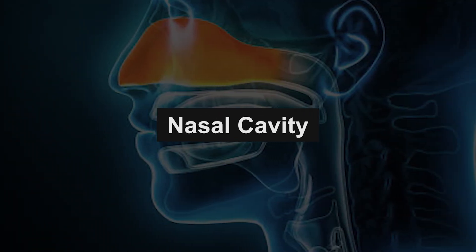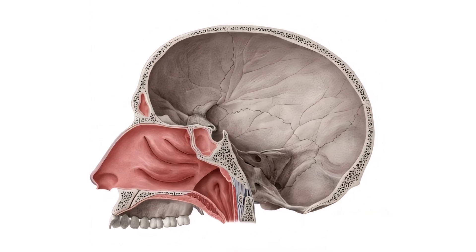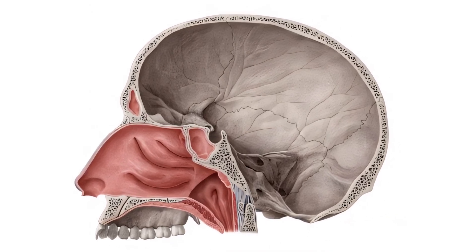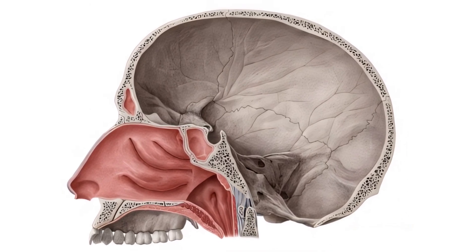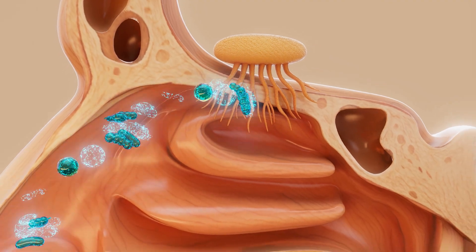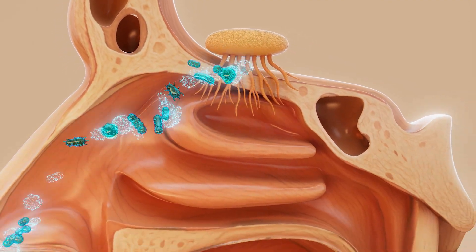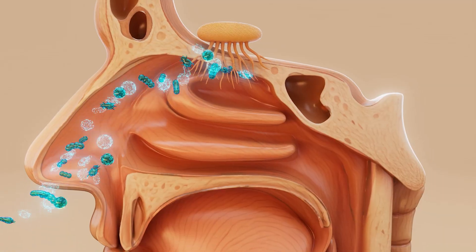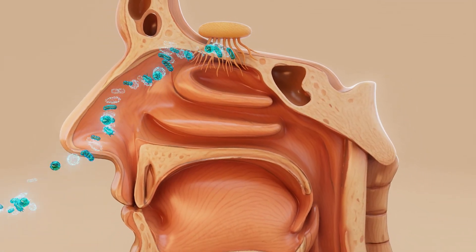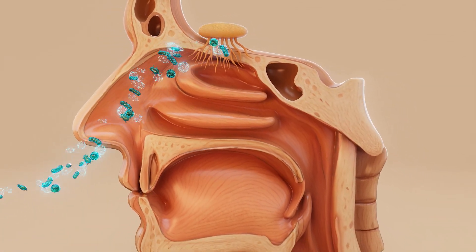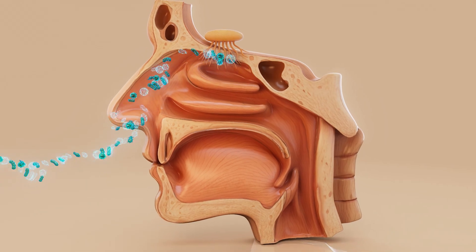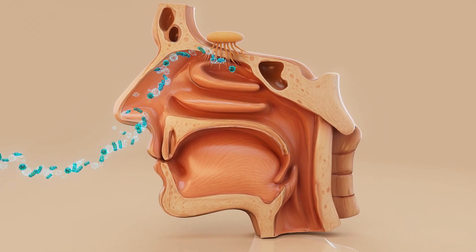The nasal cavity is the large, hollow space behind the nose. It extends from the nostrils to the back of the throat. This cavity is lined with a mucus membrane that helps to trap dust, germs, and other harmful particles. This membrane also keeps the inside of the nose moist and helps warm and humidify the air before it reaches the lungs.